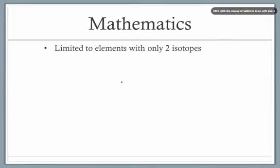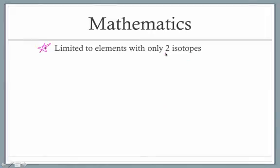Let's start by talking about some of the mathematics involved in this process. The first thing you should note is that we're going to limit which elements we can work with—we're only going to be dealing with elements that have two isotopes. Anything more than two isotopes and the mathematics gets a little bit more complicated than we have time to tackle.